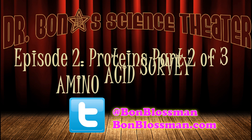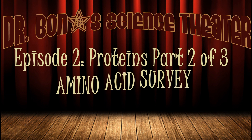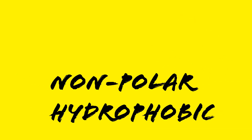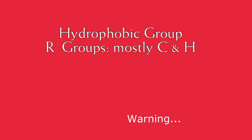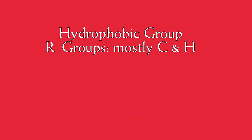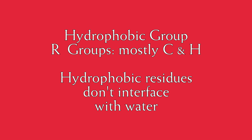We are going to separate these amino acids into categories. The first category being the nonpolar hydrophobic amino acids. The hydrophobic group of amino acids are going to have R-chains that are primarily carbon and hydrogen chains. They're going to obviously be hydrophobic. In a protein, hydrophobic amino acid residues are going to be away from the aqueous environment — wherever the protein is interfacing with water. So in the case of a globular protein, it will be in the core of the protein.